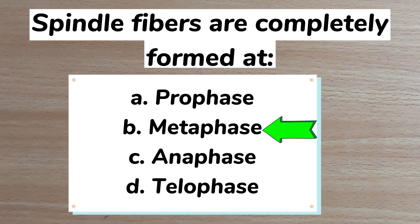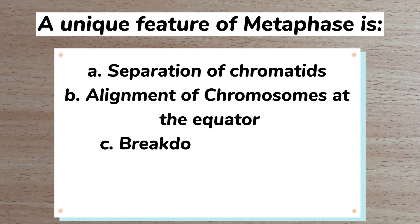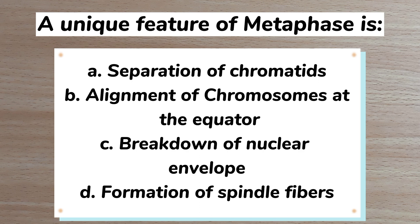Number 10. A unique feature of metaphase is: A separation of chromatids, B alignment of chromosomes at the equator, C breakdown of nuclear membrane, D formation of spindle fibers. Answer: B alignment of chromosomes at the equator.